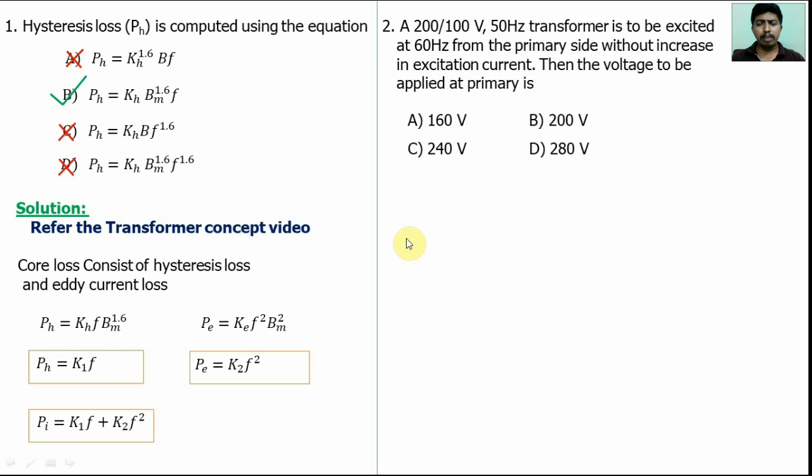Second problem. In this problem, for a 200/100 volt 50 Hz rated transformer, if the frequency 60 Hz is applied instead of 50 Hz, what will be the rated primary voltage? This is the question.